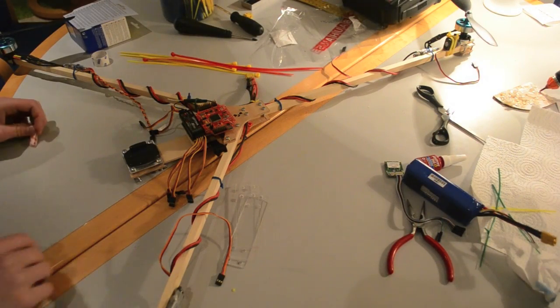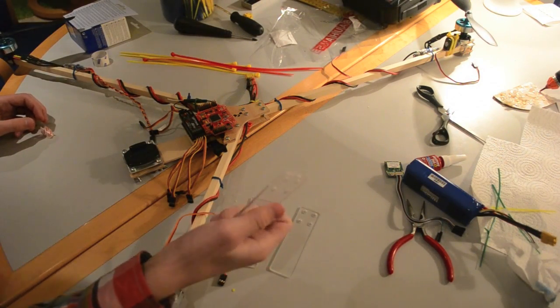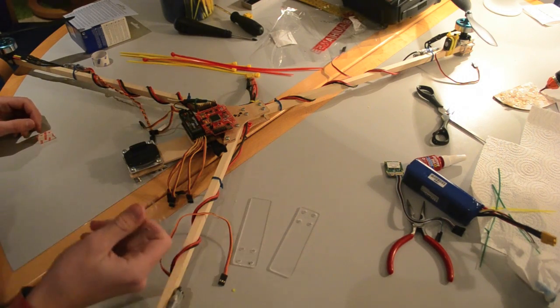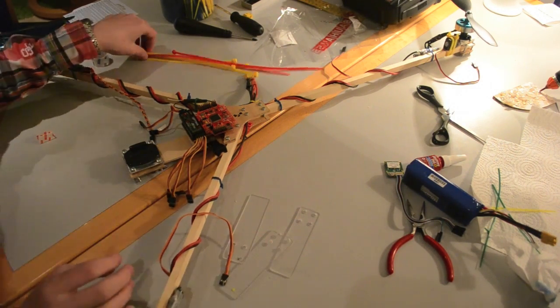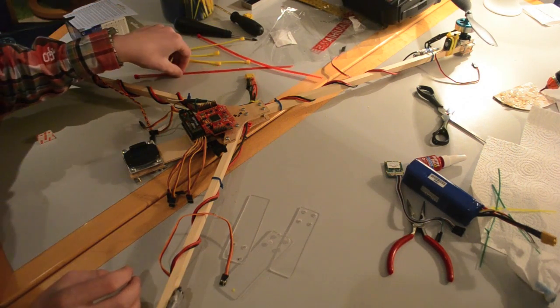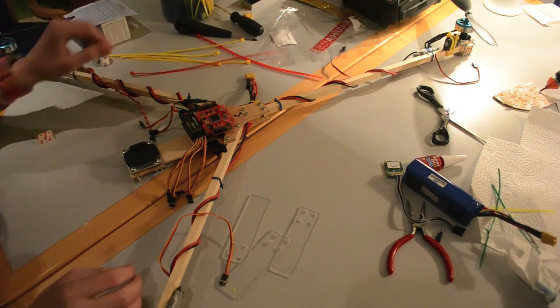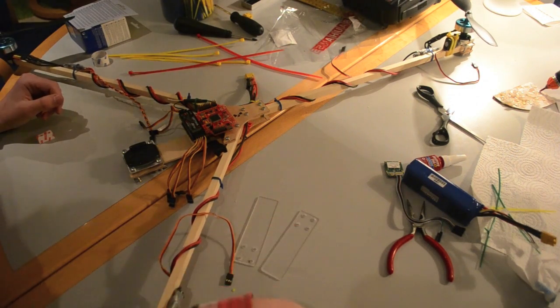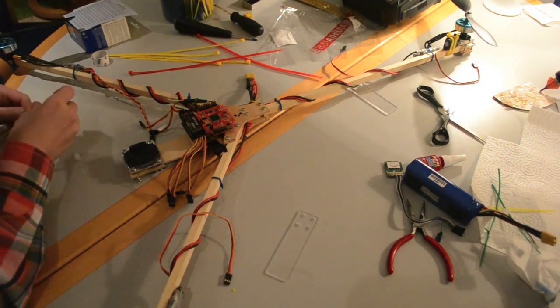Alright, we're now going to mount our landing gear that we made in acrylic or plexiglass. The two front will be mounted with some yellow zip ties, and the back one will be mounted with red zip ties.